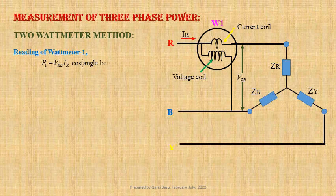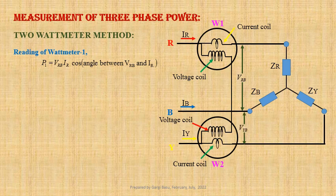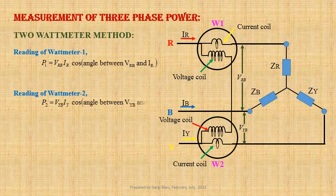cos of the angle between VRB and IR. If the current coil of wattmeter 2 is connected in Y phase, the current flowing is IY. If the pressure coil of wattmeter 2 is connected across Y and B phase, the voltage drop is VYB. Hence, the reading of wattmeter 2, P2, equals VYB times IY times cos of the angle between VYB and IY.